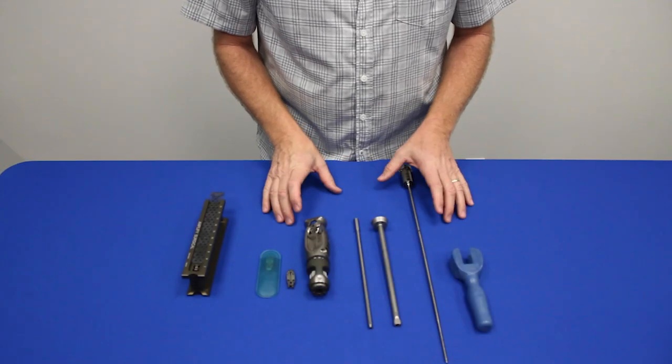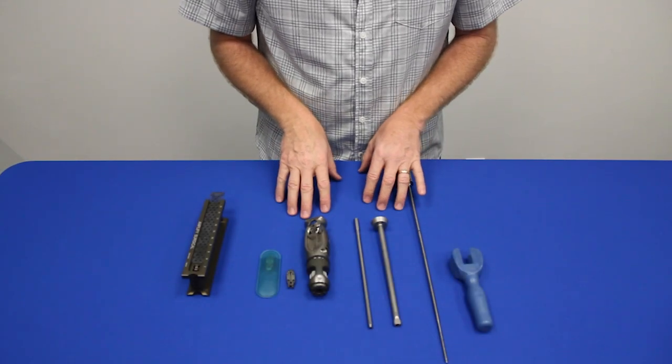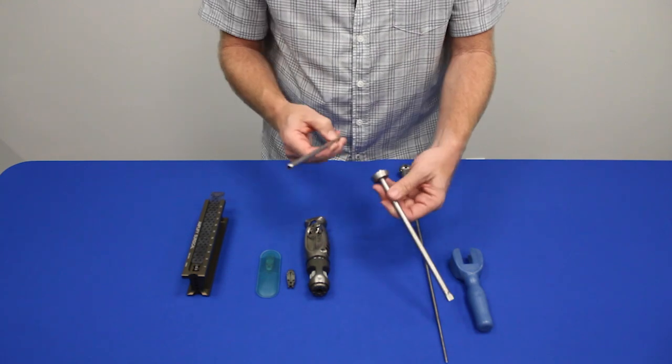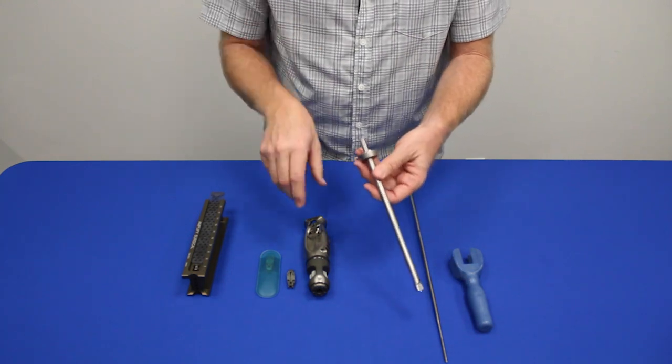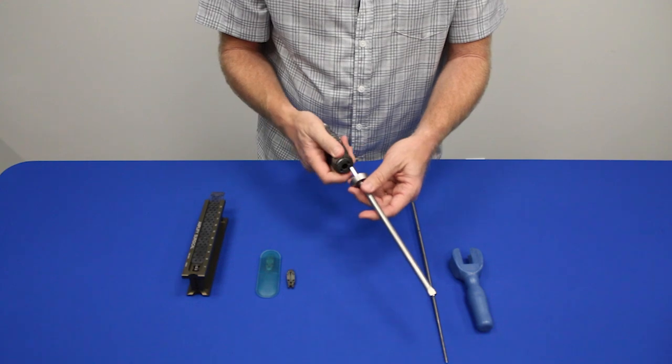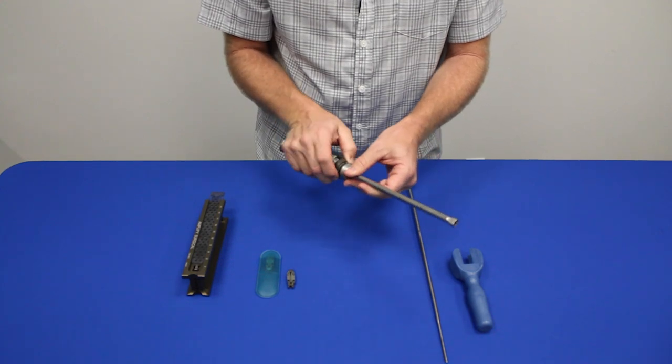So now let's go over loading the X-Handle with the implant. The first step is to put the inner tube into the outer tube and then load it onto the X-Handle itself with the click of the tabs.